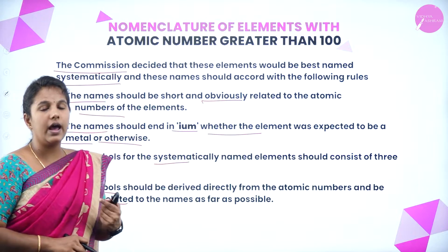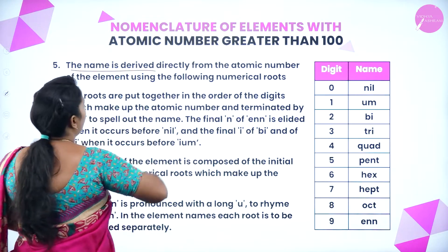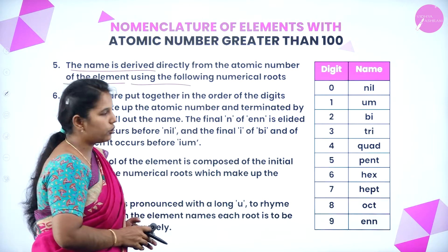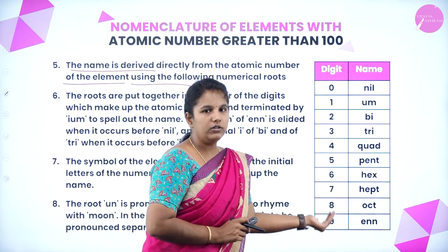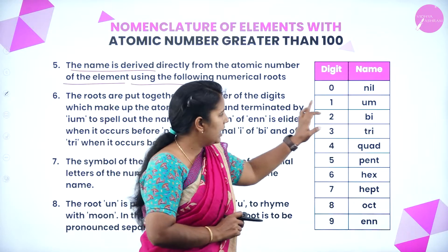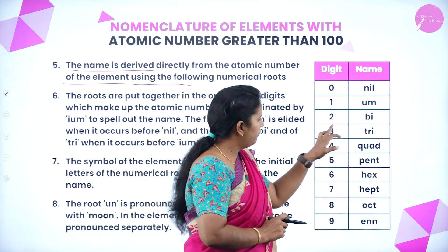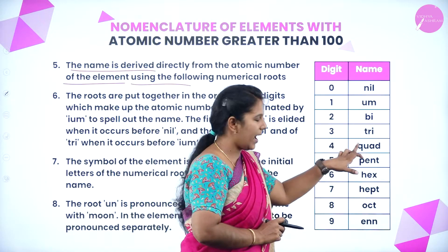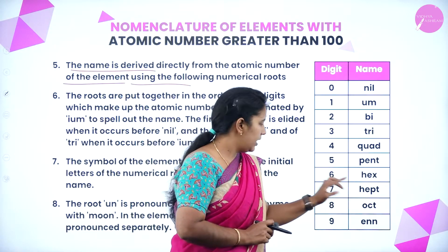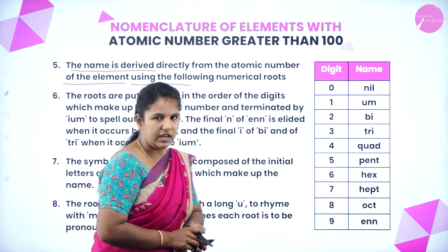The name is derived from the atomic number using the following numerical roots: 0 = nil, 1 = un, 2 = bi, 3 = tri, 4 = quad, 5 = pent, 6 = hex, 7 = hept, 8 = oct, 9 = enn.